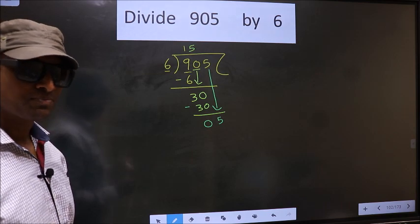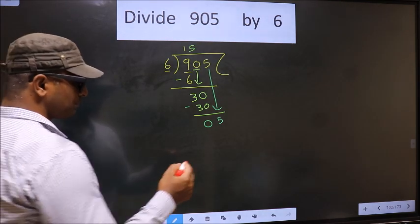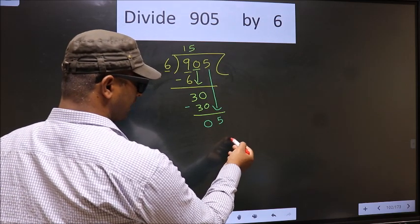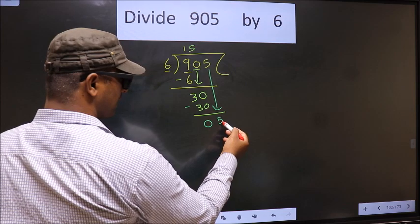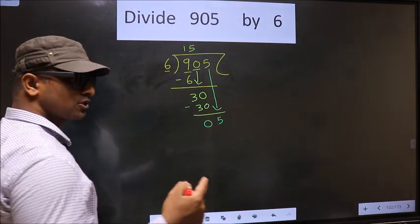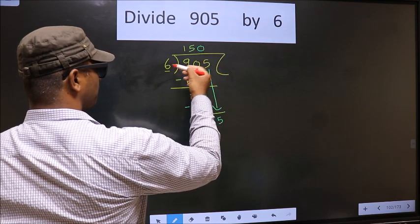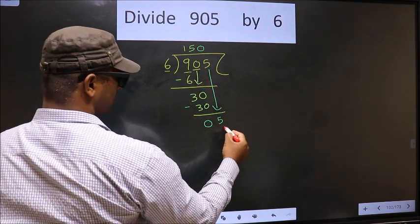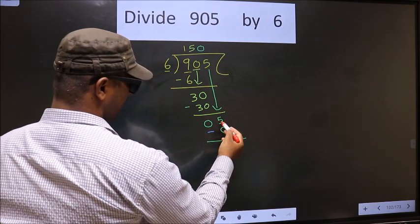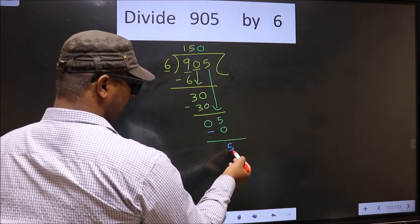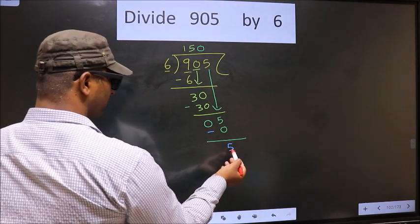Instead, what you should think of is: what number should we write here? If we write 6, that is larger than 5, so what we do is take 0 here. So 6 into 0 is 0. Now subtract 5 minus 0 equals 5. We did not bring any number down, and 5 is smaller than 6.